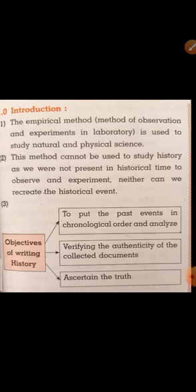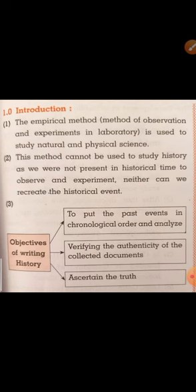Now, objectives of writing history — why do we write history? History is written to put the past events in chronological order and analyze them. These past events are arranged in a sequence and then analyzed, checked, and cross-checked. Verifying the authenticity of collected documents is also an objective — whatever documents are collected are verified whether they are correct, true, and original. The objective of history writing is also to ascertain the truth.